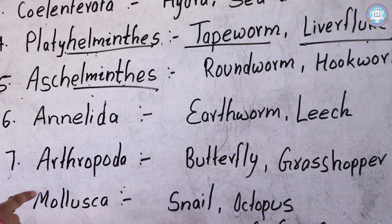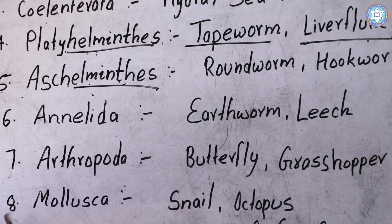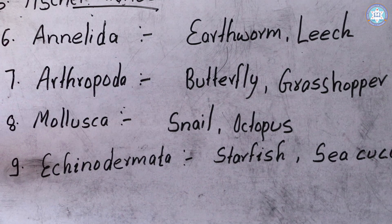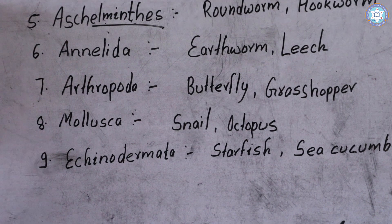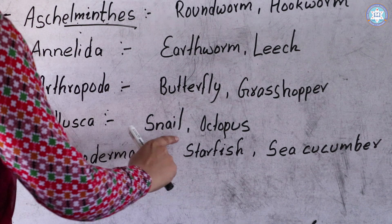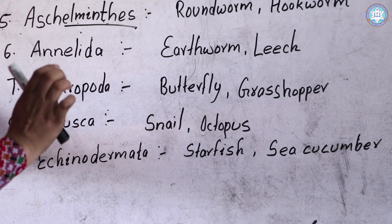After Arthropoda, the next phylum is Mollusca, also called Mollusks. Examples are Snail and Octopus. We can find snails mainly in the rainy season — after the first rains, we can see many snails around us. Octopus are marine animals mainly found in the sea.